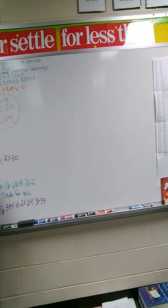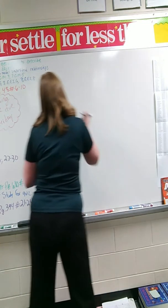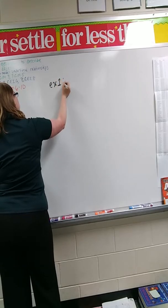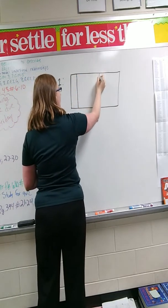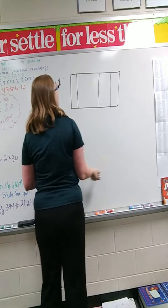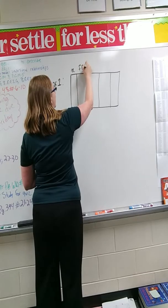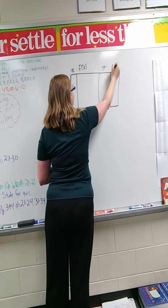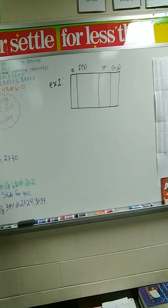If we look at example 1 on page 390, it asks us to find four solutions of y equals 7x and to write the solutions as ordered pairs. So for example 1, I'm going to make a table for this one. Thank you! So I have my x column, my f of x column, my y, and my ordered pairs.